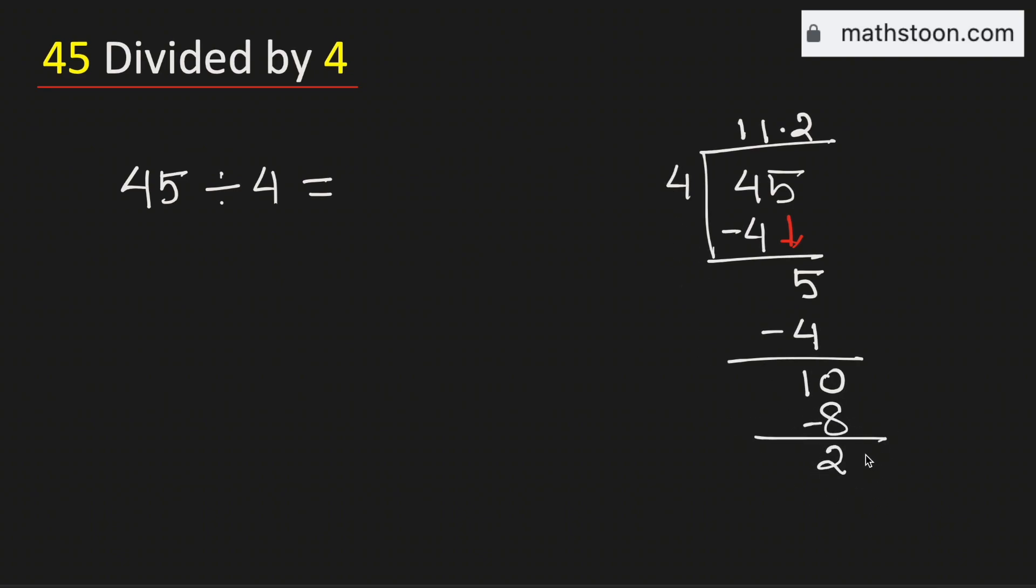As 4 cannot go into 2, we will put a 0. And we know that 4 times 5 is 20. Now subtract, we get 0.